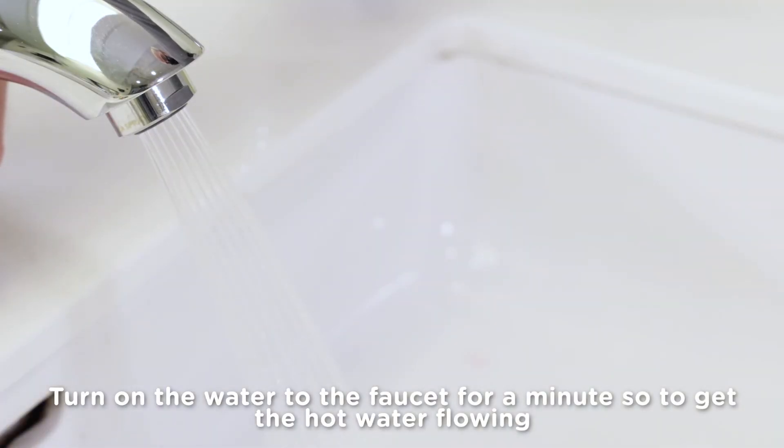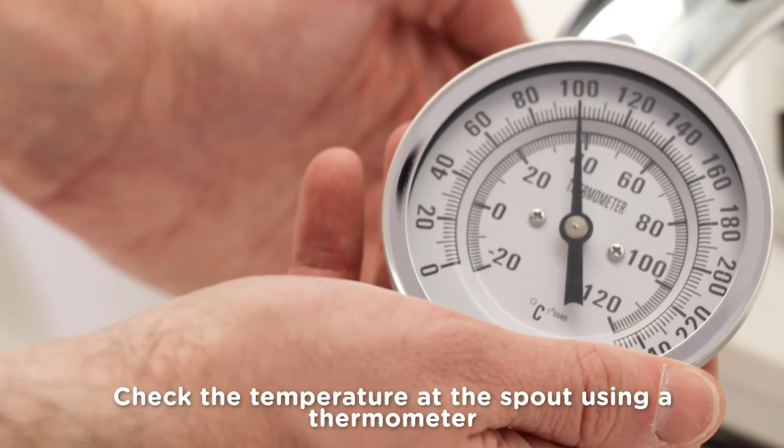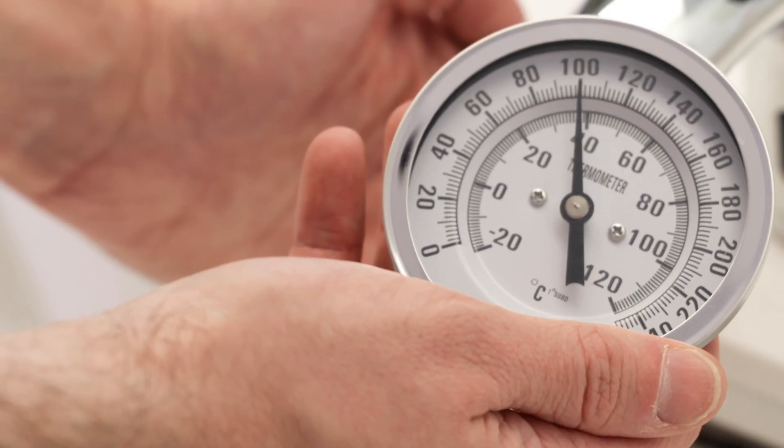Turn on the water to the faucet and let it run for a minute or so to get the hot water flowing. Then, using the thermometer, check the temperature at the spout.